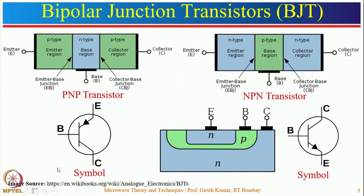A bipolar junction transistor is a 3-terminal device of two types: PNP and NPN. In PNP transistors, an N-type layer is sandwiched between two P-type layers; in NPN, a P-type layer is sandwiched between two N-type layers. These transistors are divided into three regions: emitter, base, and collector. The emitter is on one side and injects charge carriers into the collector — it should be highly doped.